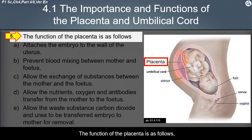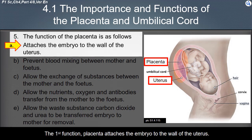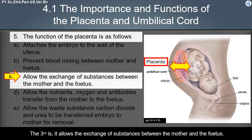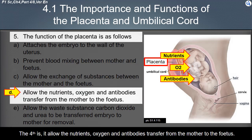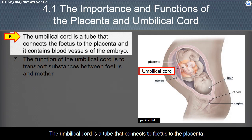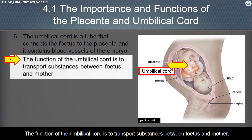The functions of the placenta are as follows: it attaches the embryo to the wall of the uterus; it prevents blood mixing between mother and fetus; it allows the exchange of substances between the mother and the fetus; it allows nutrients, oxygen, and antibodies to transfer from the mother to the fetus; and it allows waste substances — carbon dioxide and urea — to be transferred from the embryo to the mother for removal. The umbilical cord is a tube that connects the fetus to the placenta and contains blood vessels of the embryo. Its function is to transport substances between the fetus and the mother.